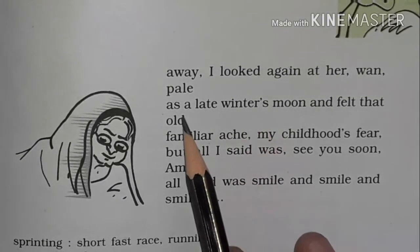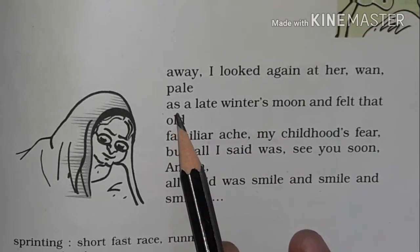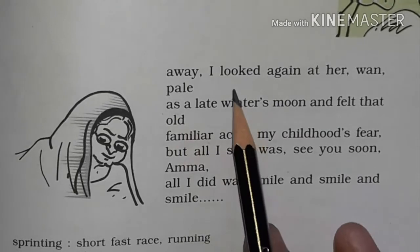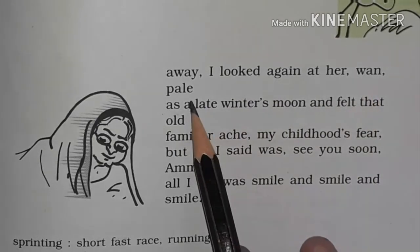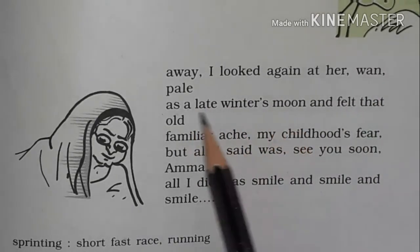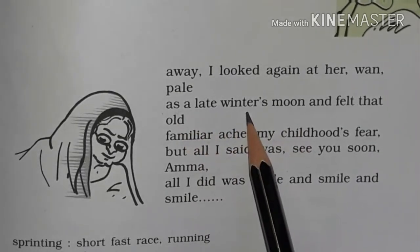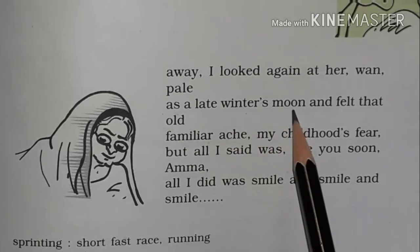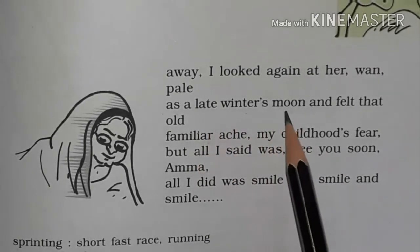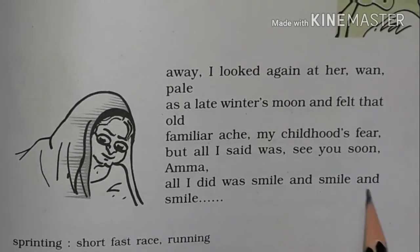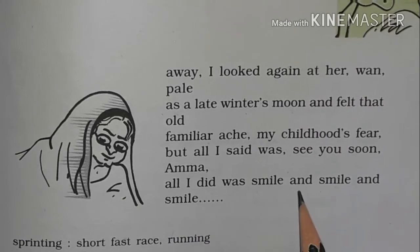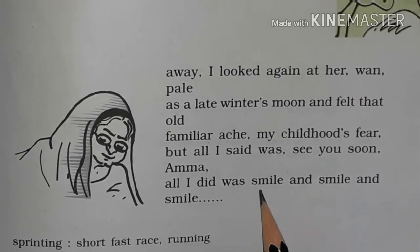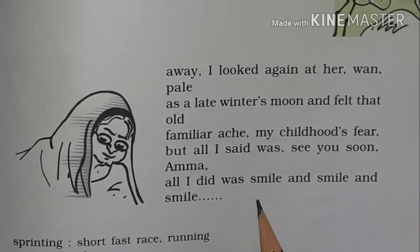Now for the poetic devices. When we use 'as' or 'like' to compare, the poetic device is a simile. For example, 'pale as a late winter's moon' — the poet's mother's face is compared to a winter's moon. That is a simile. Also, the word 'smile' is repeated three times — 'smile and smile and smile' — so the poetic device there is repetition.